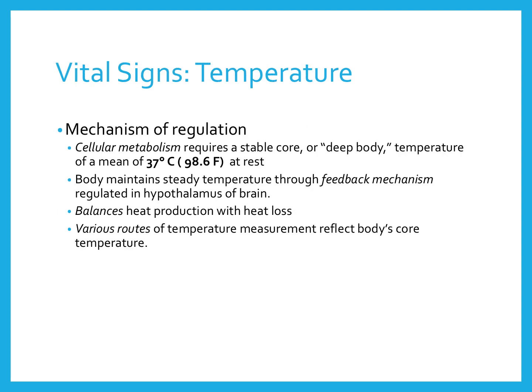In general, the average body temperature is about 37 degrees Celsius or 98.6 degrees Fahrenheit at rest. It is our deep body core temperature. It's a steady temperature regulated through a feedback mechanism by the hypothalamus of the brain. It balances heat production with heat loss. It varies by route — axillary, rectal, oral, tympanic — and different routes give us different measurements.